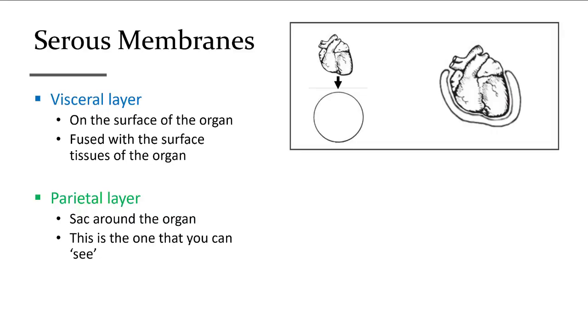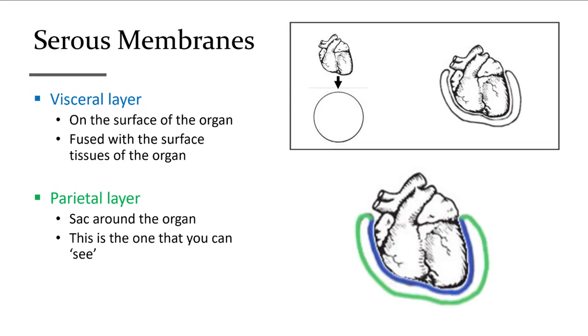Serous membranes are known as a double membrane. It really starts off, as we can see the heart above—the image above with the circle below—that heart pushes down into that circle. If you think of that circle as a balloon, it pushes down into it. We can see to the right the heart is nestled within. By pushing down we have two layers. The blue layer is touching the surface of the heart in this example, that's known as the visceral layer, and the parietal layer is in green. It's known as a double layer because it's folded back on itself.